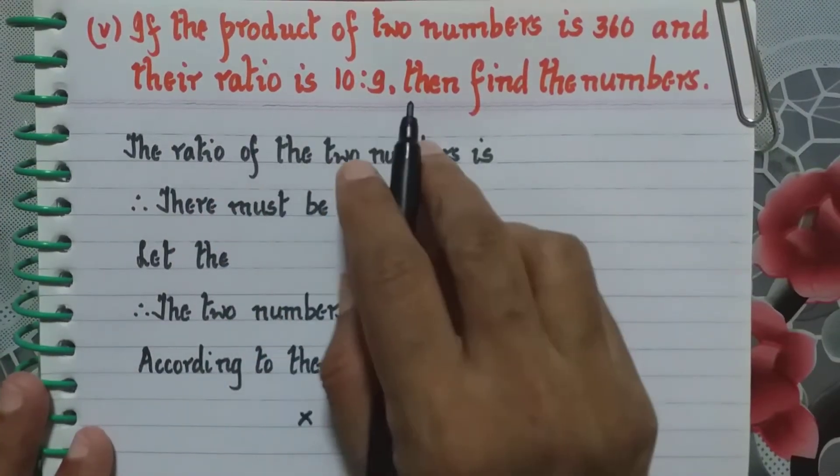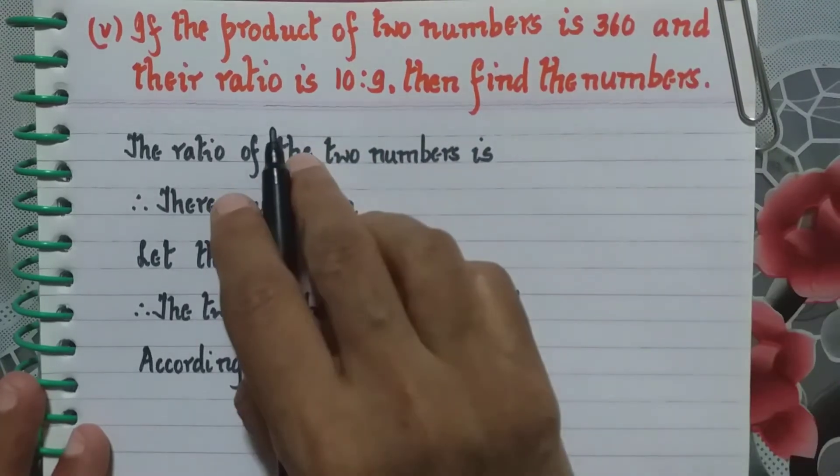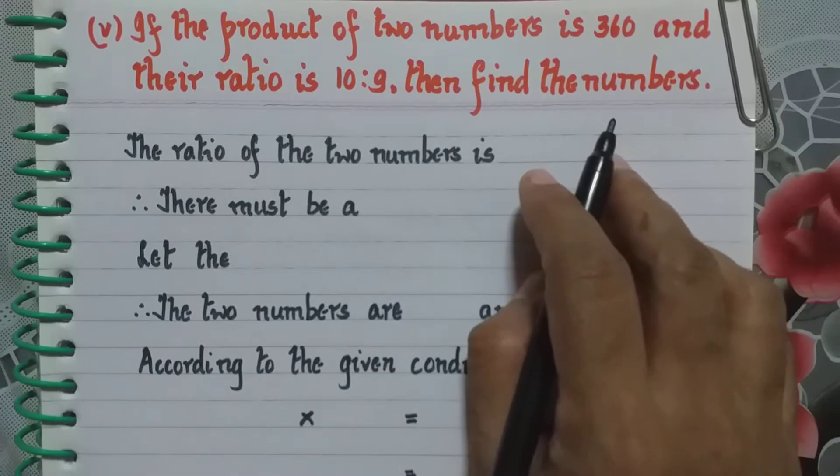Fifth sub question. If the product of two numbers is 360 and their ratio is 10 is to 9, then find the numbers.